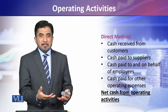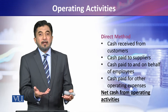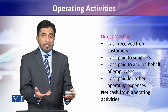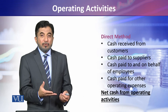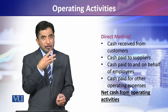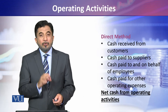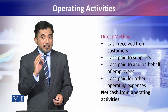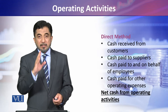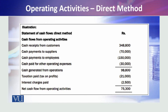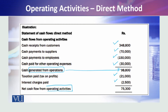Then there are expenses that cannot go through a supplier — for example, office rent paid in cash goes under other operating expenses payment. These four categories — cash from customers, cash to suppliers, cash to/on behalf of employees, and other operating expenses — are what you need to know about how cash generated from operations is calculated under the direct method. After adding related taxation and interest payments, you arrive at total operating activity cash flow.